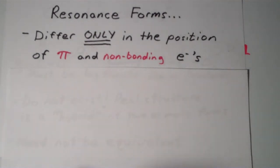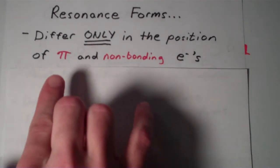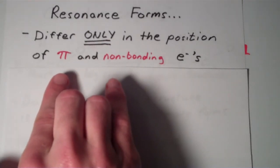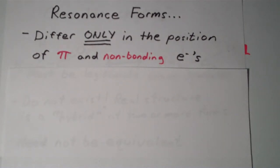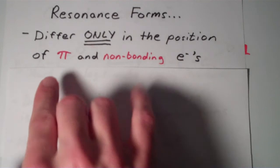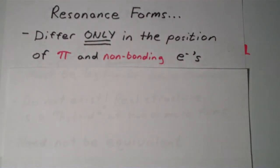So in order to have more than one resonance form for a particular compound or ion or what have you, there needs to be a pi bond, whether it's a double or triple bond somewhere. And there's got to be non-bonding electrons. So if your molecule doesn't have both of these things, then there can't really possibly be more than one resonance form for it.